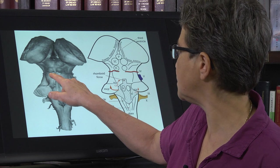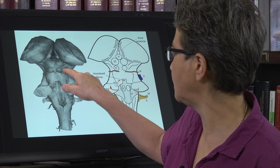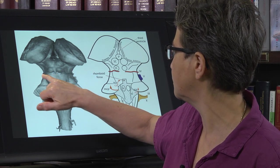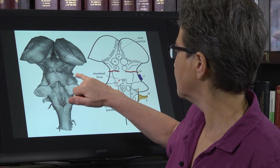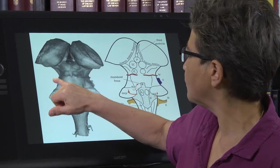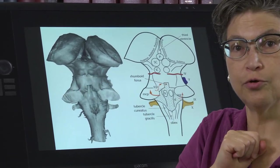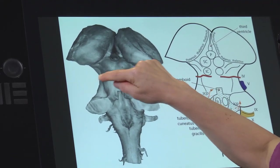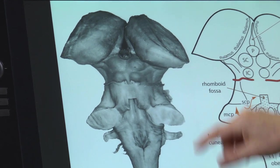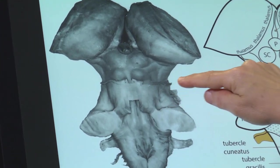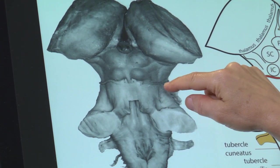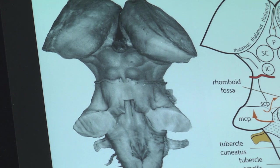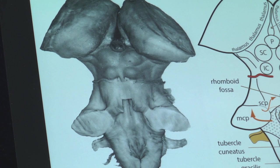Just behind the inferior colliculi, you can see this lovely little nerve — the trochlear nerve. It's coming out of the dorsal surface of the midbrain and going around to exit from the ventral side.